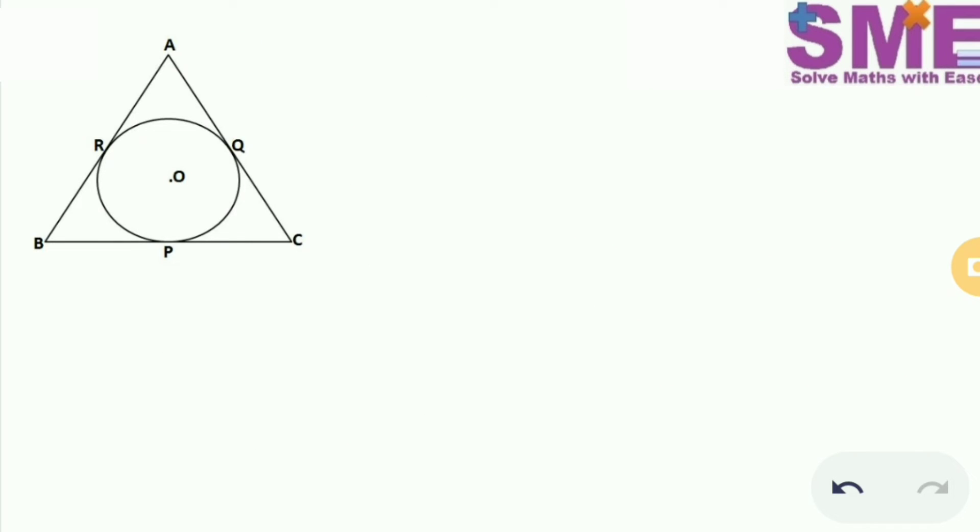First we will find the radius of this circle without using trigonometry. We will start with joining point A with point P, point B with point Q and point C with point R.